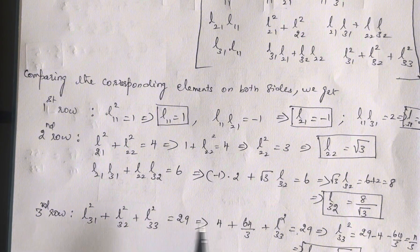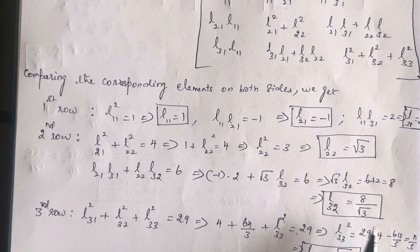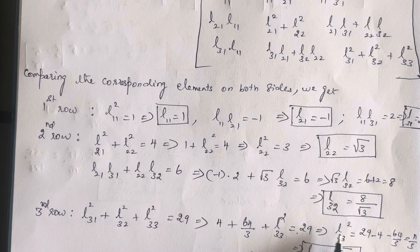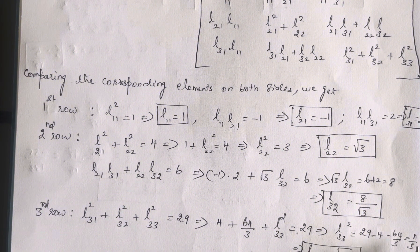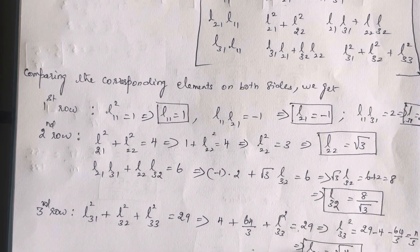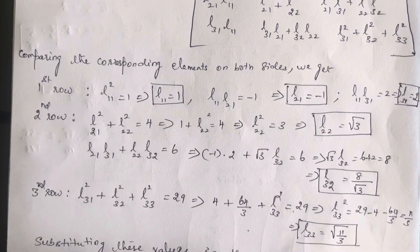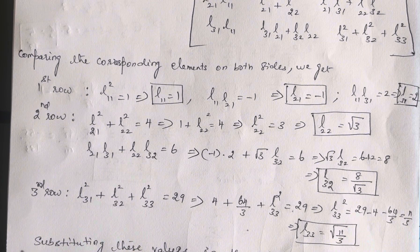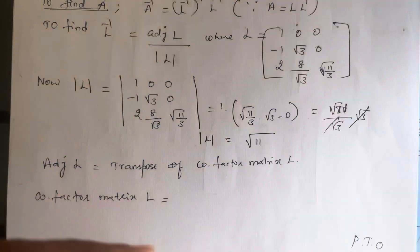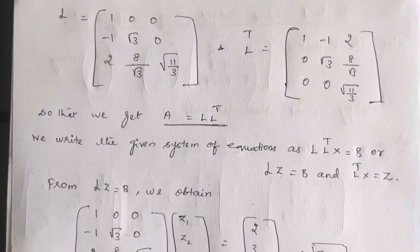The second equation L21·L31 + L22·L32 = 6. Substituting L21 = -1, L31 = 2, and L22 = √3, we solve for L32 = 8/√3. For the third row: L31² + L32² + L33² = 29. Substituting L31 = 2 (so L31² = 4) and L32 = 8/√3 (so L32² = 64/3), we get L33² = 11/3, so L33 = √(11/3). The lower triangular matrix L = [[1, 0, 0], [-1, √3, 0], [2, 8/√3, √(11/3)]].